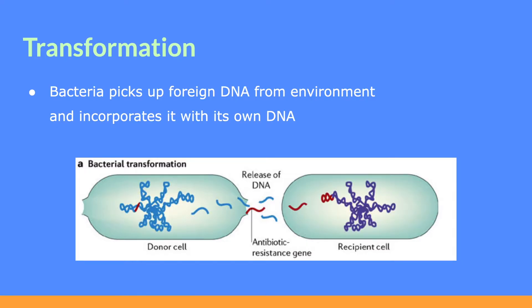Firstly, we have transformation, which occurs when bacteria pick up foreign DNA from the environment and incorporate it with its own DNA. If you look at the picture below, you'll see that the donor cell releases DNA into the environment, which includes an antibiotic resistance gene. The recipient cell picks up this foreign DNA and incorporates it into its own DNA, as you can see on the right side of the picture.